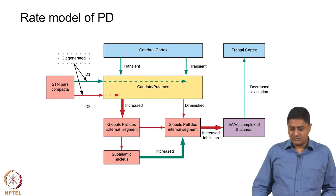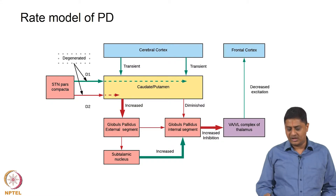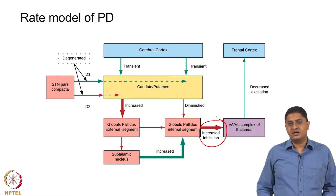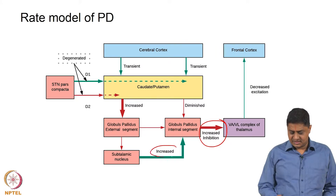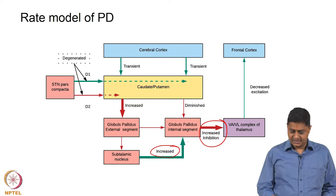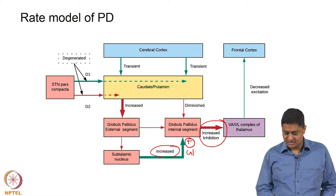What was then found was that this led essentially to an increased inhibition at the thalamocortical level — at the output level. What was found was an increase in inhibition and an increase in excitation going from the subthalamic nucleus to the GPi. Let us remember that this is an excitatory pathway. The subthalamic nucleus to globus pallidus internal pathway is excitatory; its neurotransmitter is glutamate.